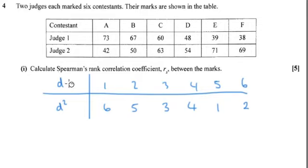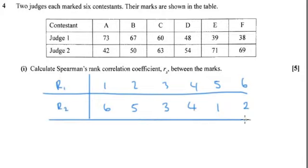What have I put D there for? These are ranks. So this is the ranks for judge 1 and the ranks for judge 2. Then we find the difference between the ranks. So this is D, difference between the ranks.